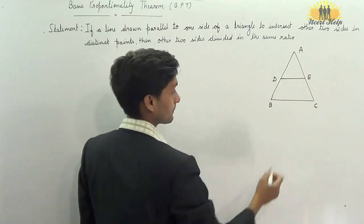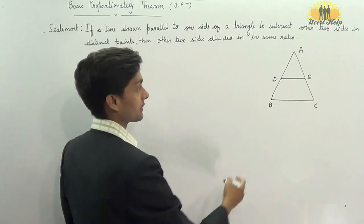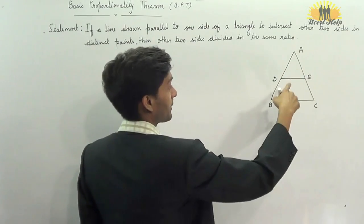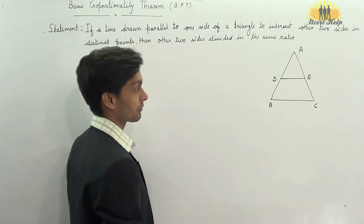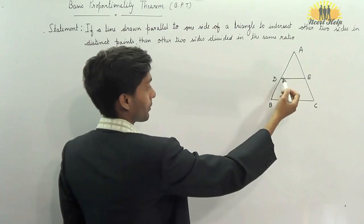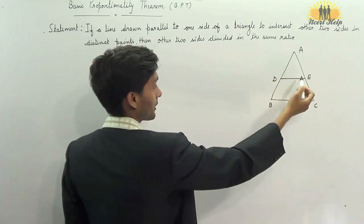B at D and A, C at E and we have to prove that other two sides are divided by D, E in same ratio. So, we have to prove AD upon DB is equal to AE upon EC.